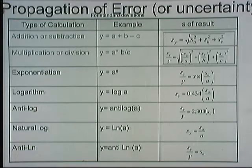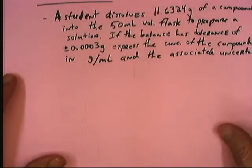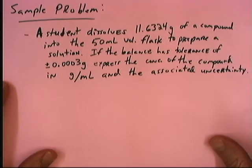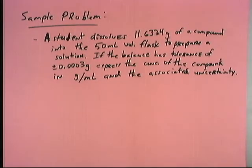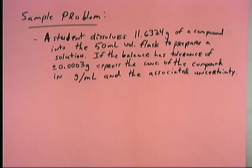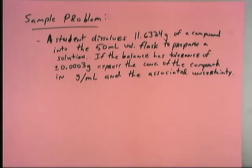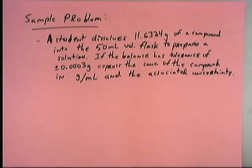Here's the sample problem. A student dissolves 11.6324 grams of a compound into the 50 milliliter volumetric flask we considered earlier to prepare a solution. If the balance the student used had a tolerance of plus or minus 0.0003 grams, express the concentration of the compound in grams per milliliter and the associated uncertainty.